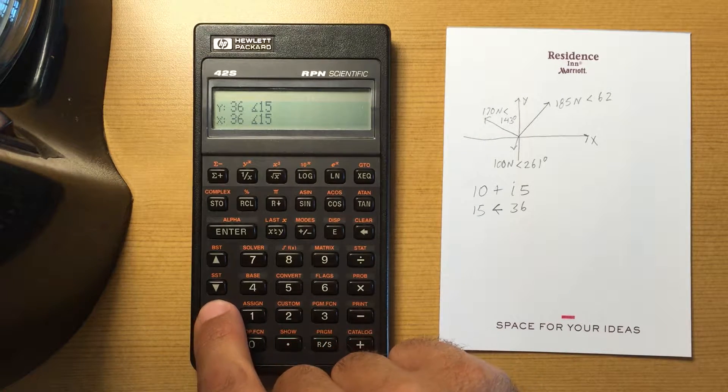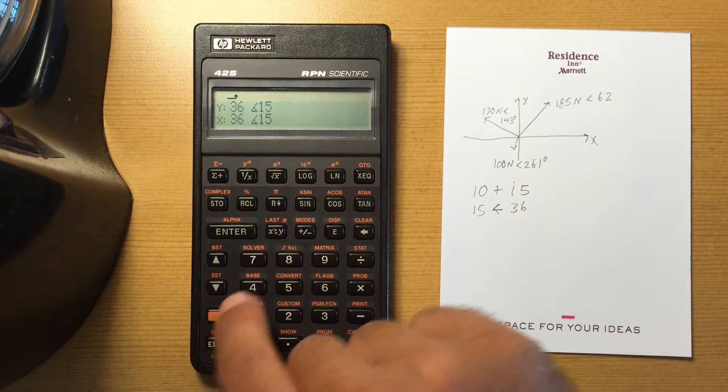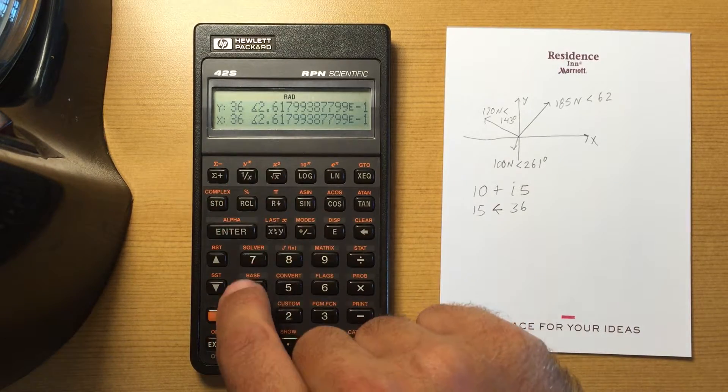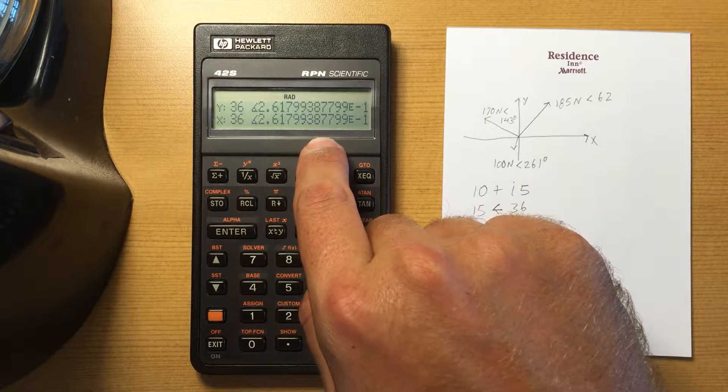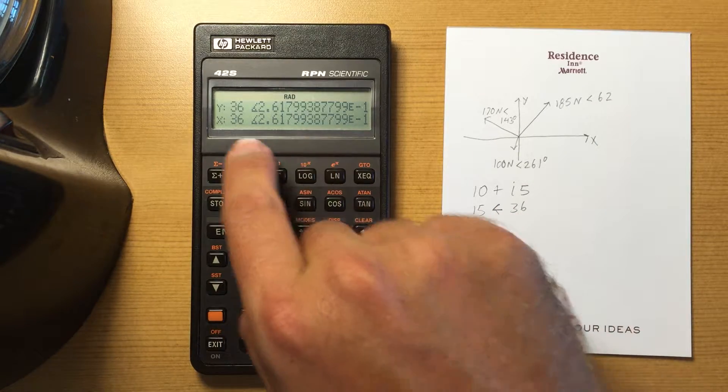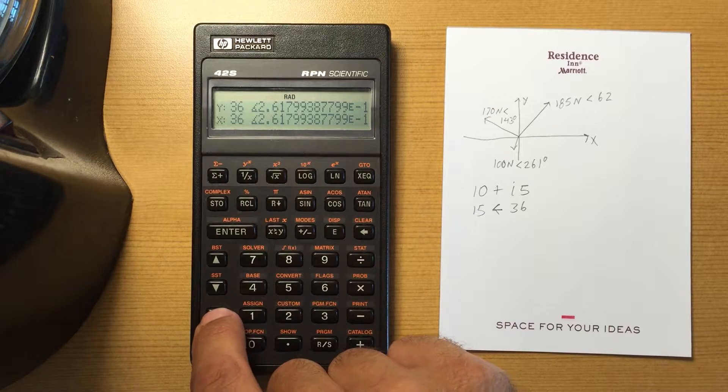If I change my mode to radians, that should go ahead and automatically shift the angle to radians. It still kept the same magnitude there.